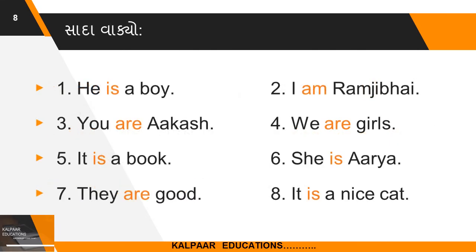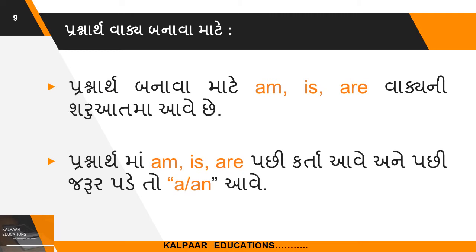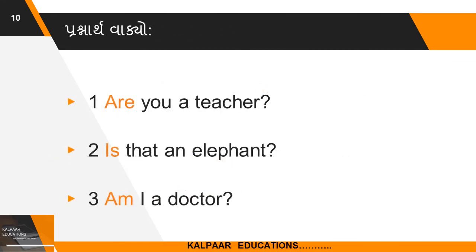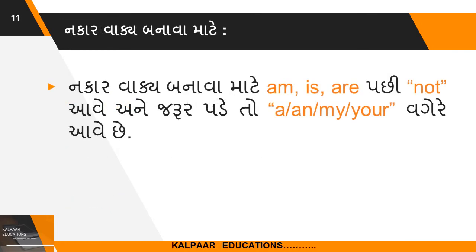થોડા સાદા વાક્યો જોઈ લઈએ. He is, I am - આ માટે જાણવું વાક્ય કેમ બનાવાય તે જોઓ. પ્રશ્નાર્થ વાક્ય બનાવા માટે Am, Is, Are ને વાક્યની આગળ મૂકાય છે. પ્રશ્નાર્થ માં Am, Is, Are પછી Subject આવે અને જરૂર પડે તો Article અથવા Noun આવે છે.